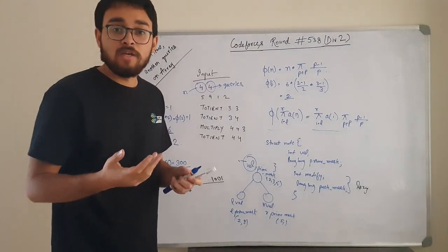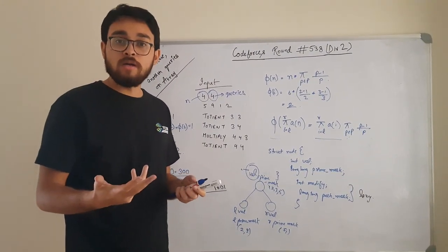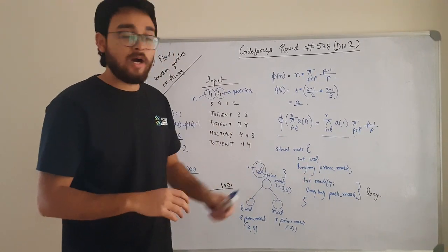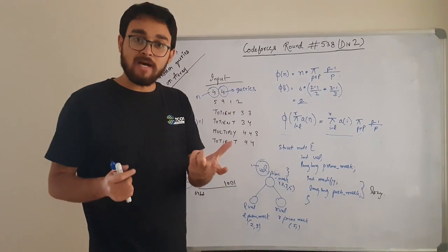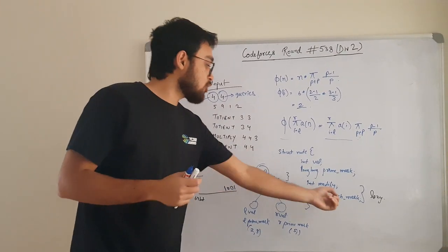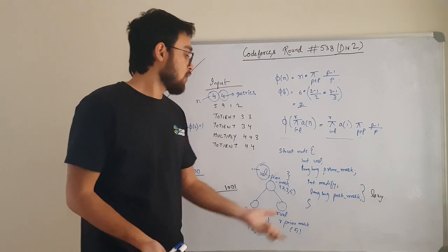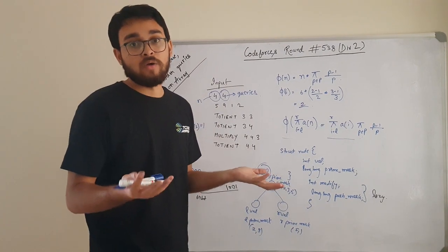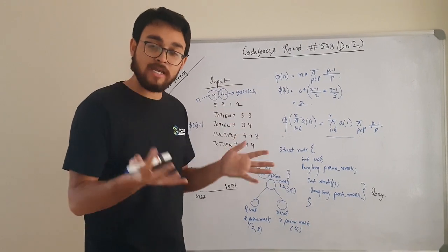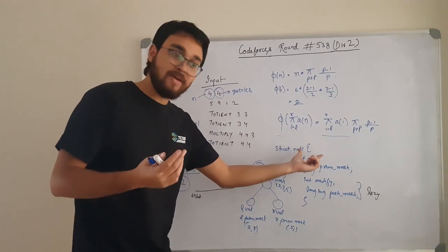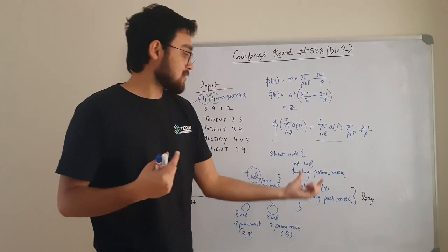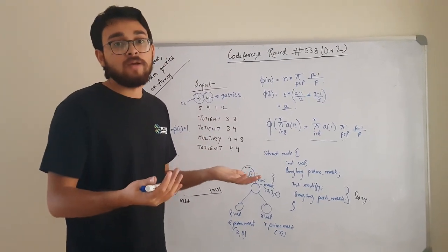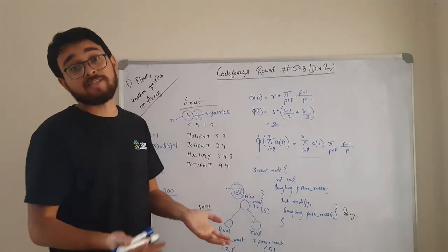What you do in lazy is, you don't update the nodes until and unless it is required. You only update them when it is required. If you get a multiply operation, you will take the mask and you will push it to push_mask. If it is not required to update as of now, you will take the number, you will put it in modify. But when it is required, you will again take the values from the modify and you will update the val. You will take the values from the push_mask, you will update the prime_mask. Similarly, whenever it is required, you do the operations. By using this, you can get an accepted in this.